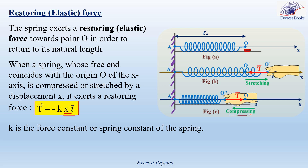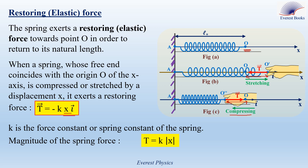X is also an abscissa, so it is a position — the position of the right end of the spring. The magnitude of the elastic force is a positive quantity, so T = K times the absolute value of X. The elastic force is expressed in newtons in SI, and the abscissa in meters, so the unit of the force constant is newtons per meter.